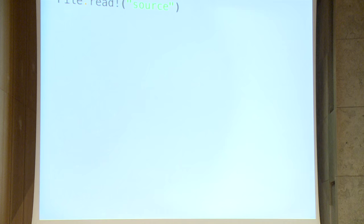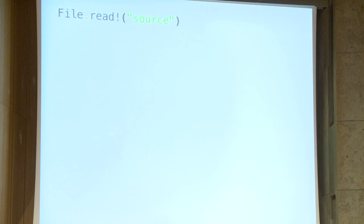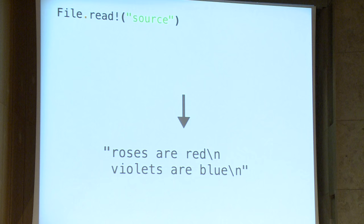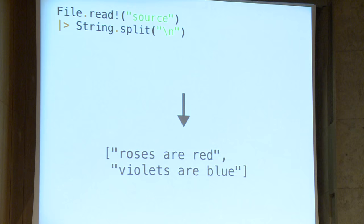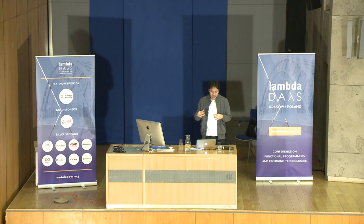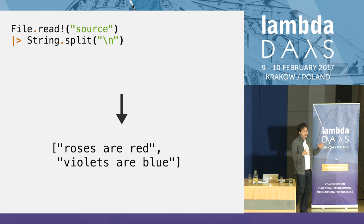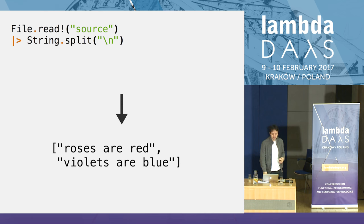How are we going to solve this in Elixir? The simplest solution is to use the Enum module, which is eager. The first thing we do is call File.read, which loads the whole file into memory. Then we call String.split to break that whole file into a bunch of lines. So now instead of having a huge string, we have a list with multiple strings, each being a line of the original text.